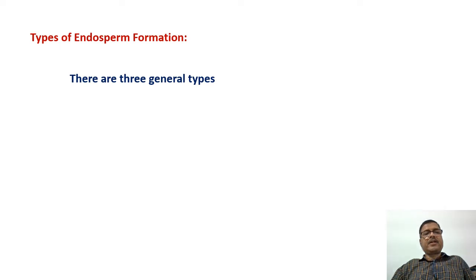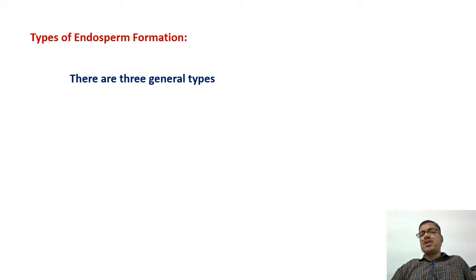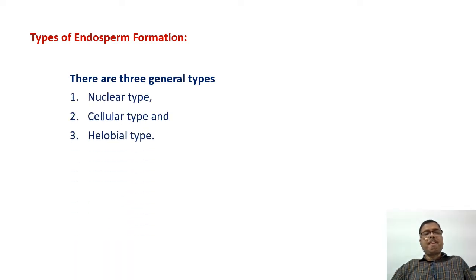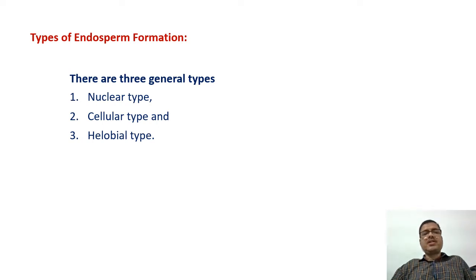There are three general types of endosperm formation: namely, nuclear type, cellular type, and helobial type.